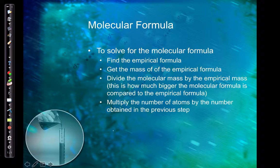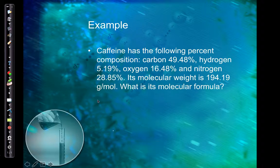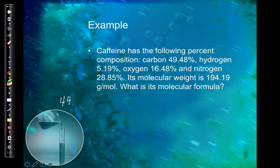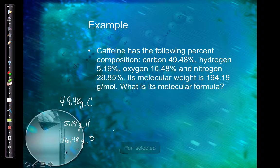Caffeine has the following percent composition, and its molecular weight is 194.19 g/mol. We need to find the molecular formula, so first calculate the empirical formula. Convert percentages to masses assuming 100 grams: 49.48 g carbon, 5.19 g hydrogen, 28.85 g nitrogen, and 16.48 g oxygen.